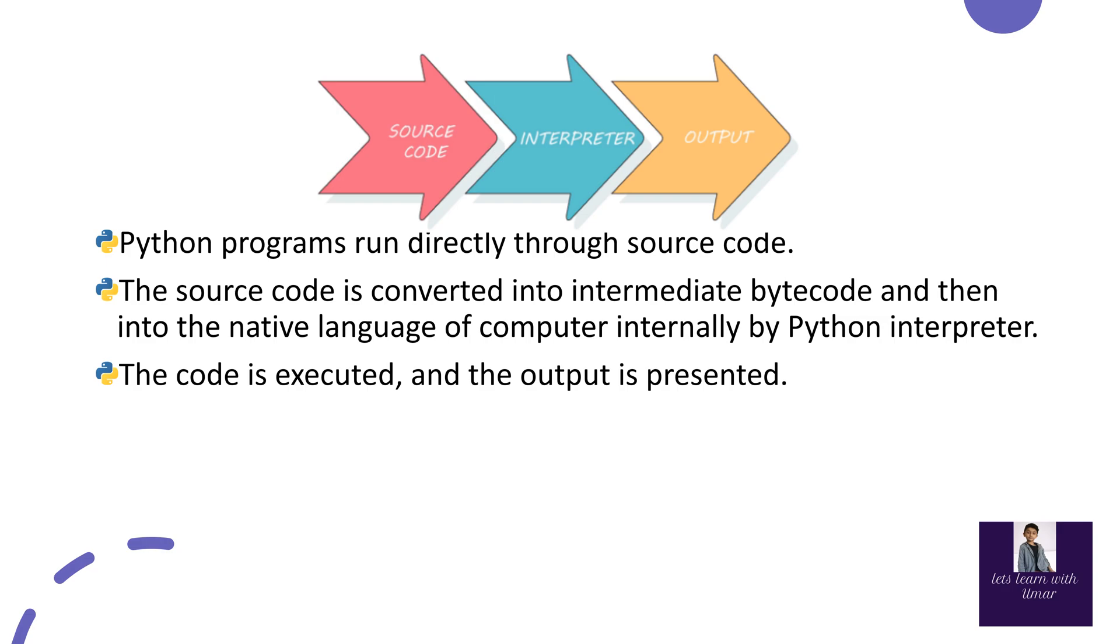Python programs run directly through source codes. The source code is converted into intermediate bytecode and then into the native language of computer, internally by the Python interpreter. The code is executed and the output is presented.